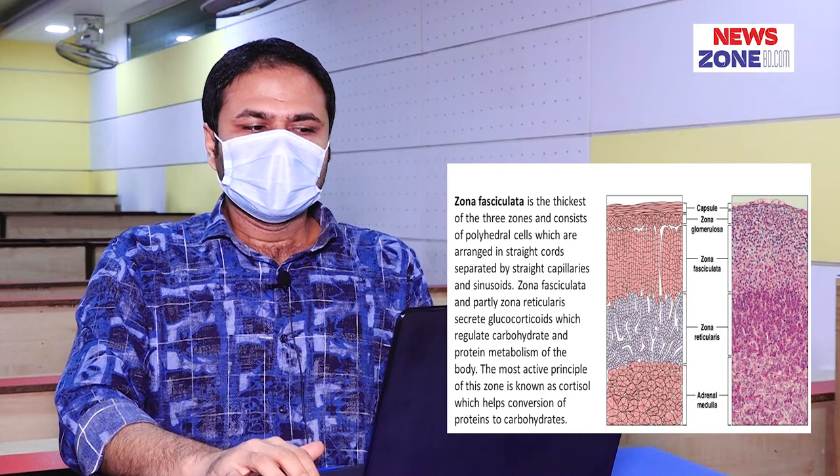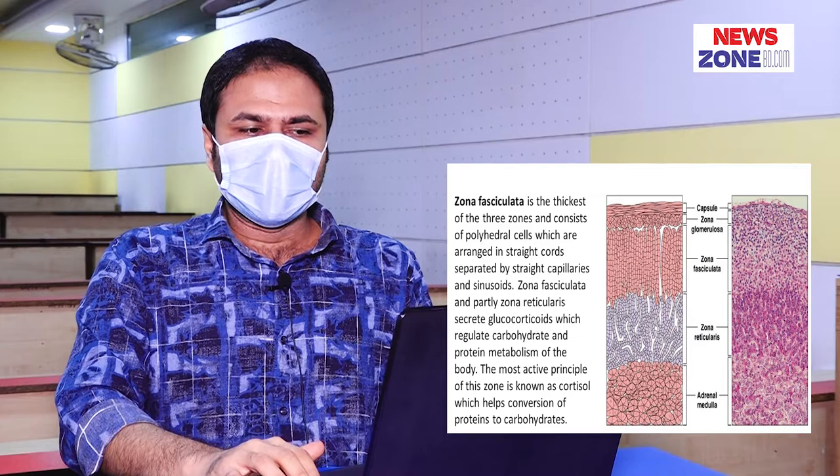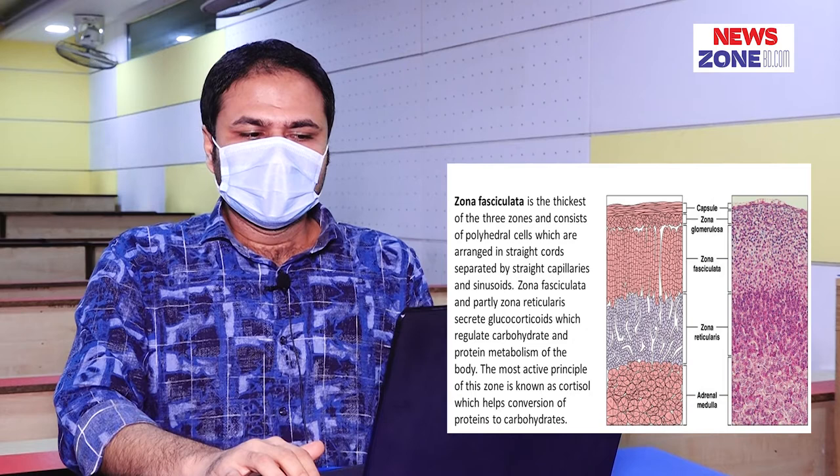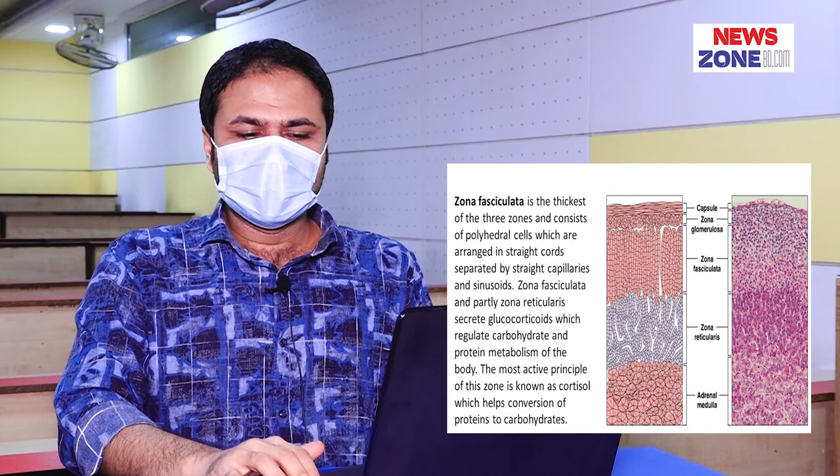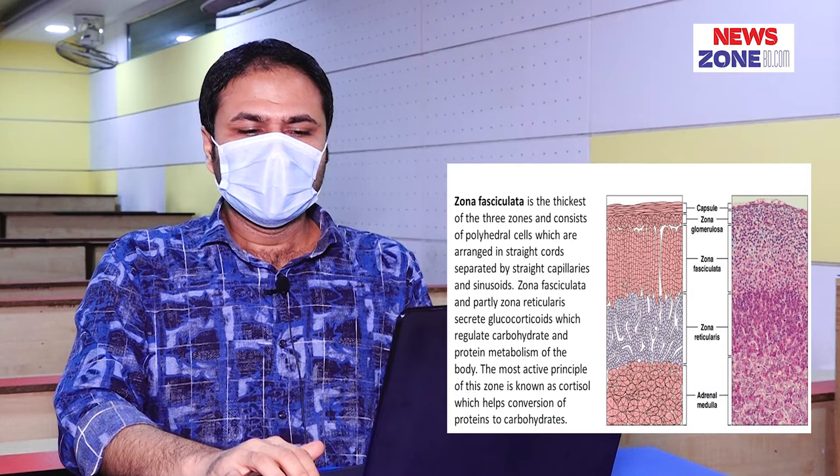Zona fasciculata. It is the thickest zone and consists of polyhedral cells arranged in straight cords, separated by straight capillaries and sinusoids. This zone secretes glucocorticoids, which regulate carbohydrate and protein metabolism of the body. The most active principle of this zone is known as cortisol, which helps conversion of proteins to carbohydrates.